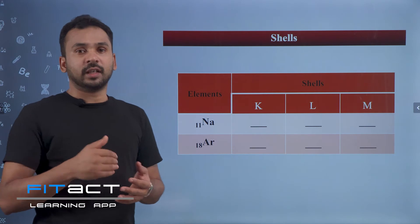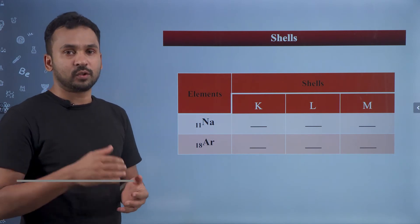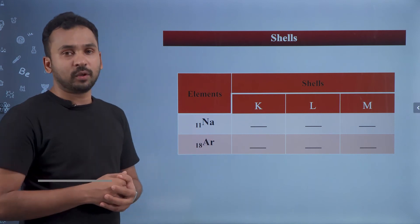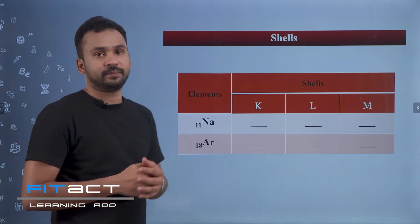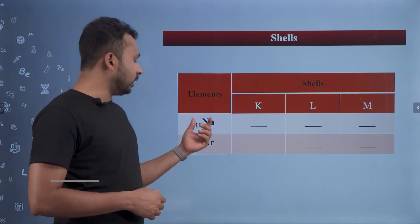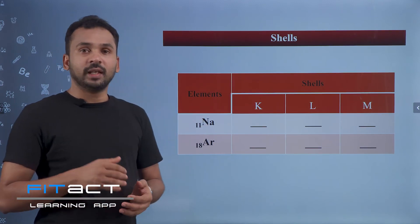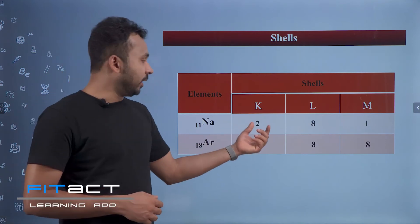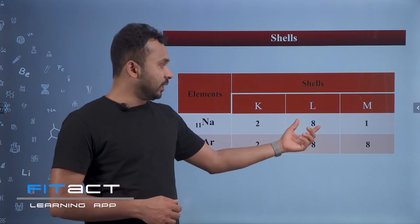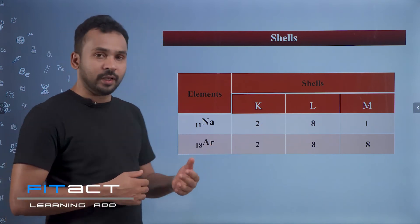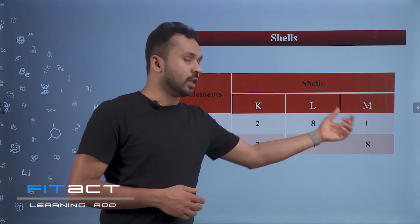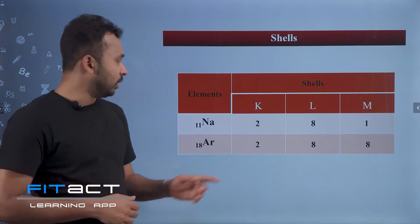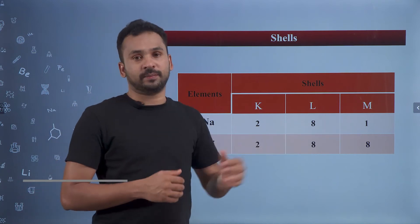Similarly, we can write the electronic configuration of sodium and argon. For sodium, the atomic number is 11, so there are 11 electrons. 2 electrons fill the K-shell, 8 electrons fill the L-shell, and the remaining 1 electron goes into the M-shell. Thus, the electronic configuration of sodium is 2, 8, 1.